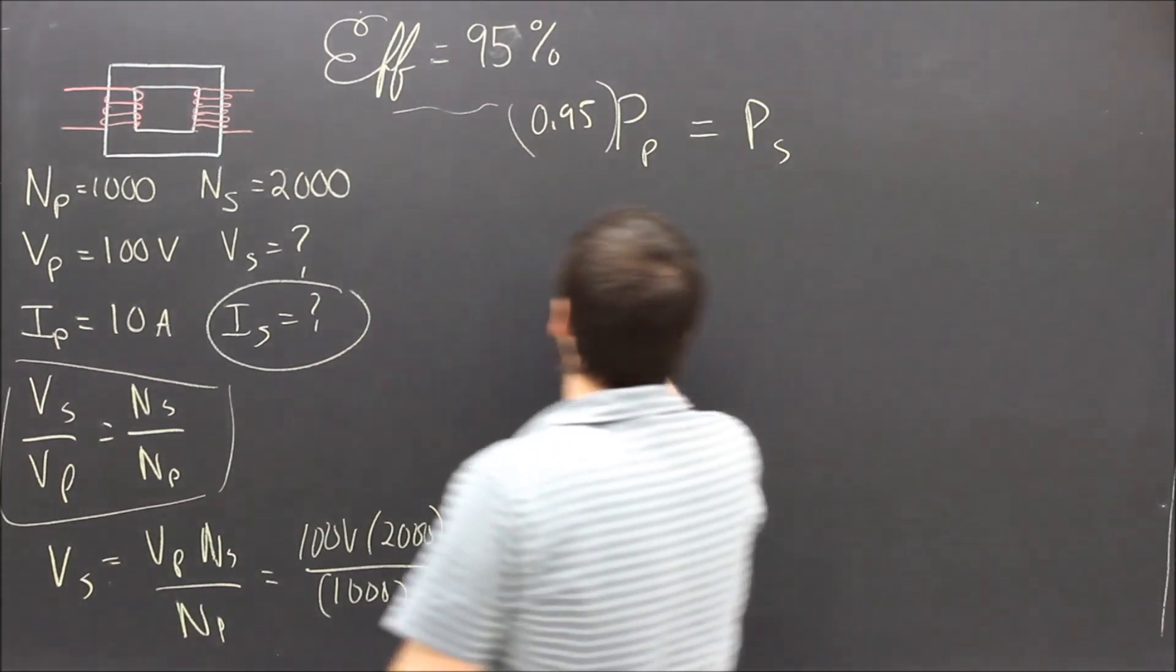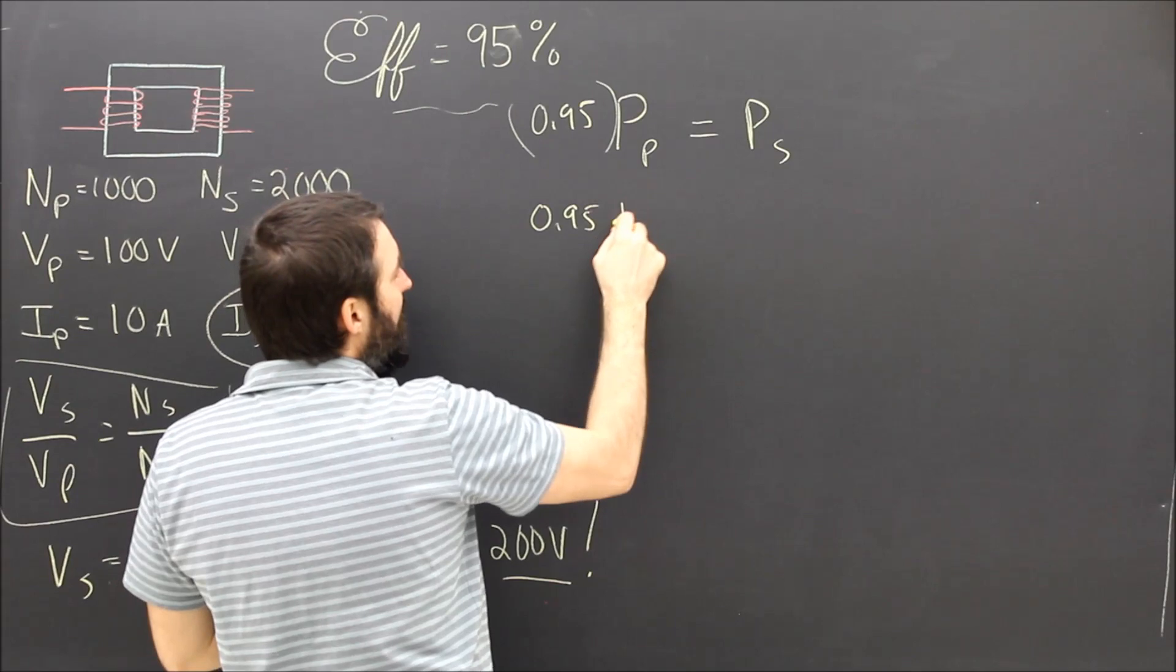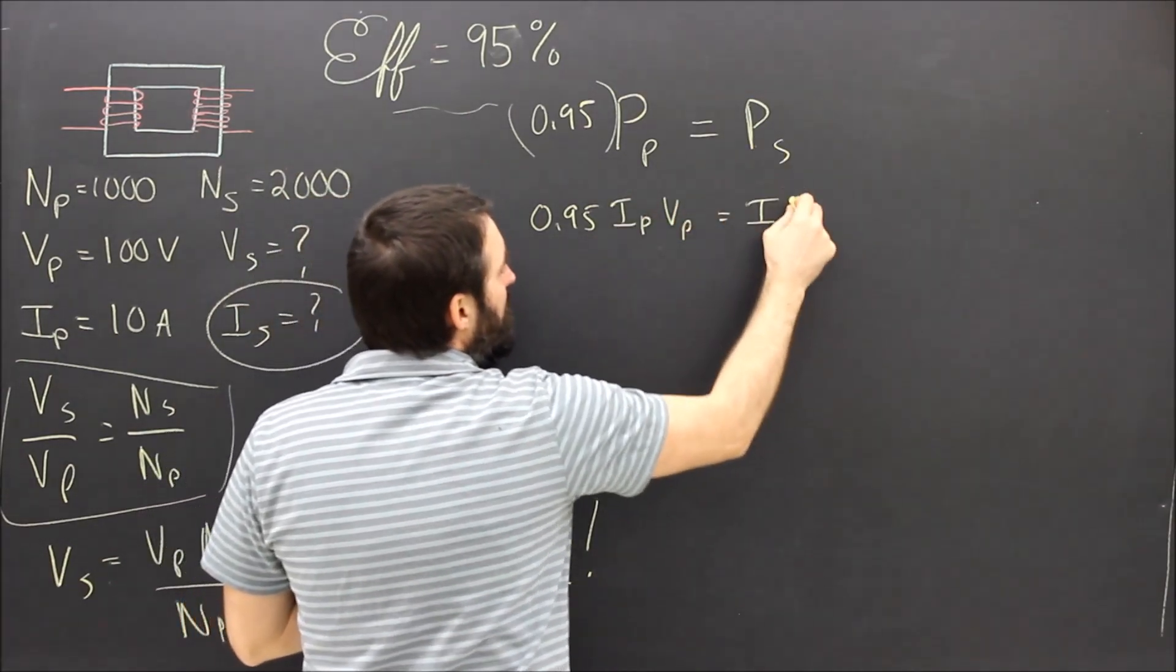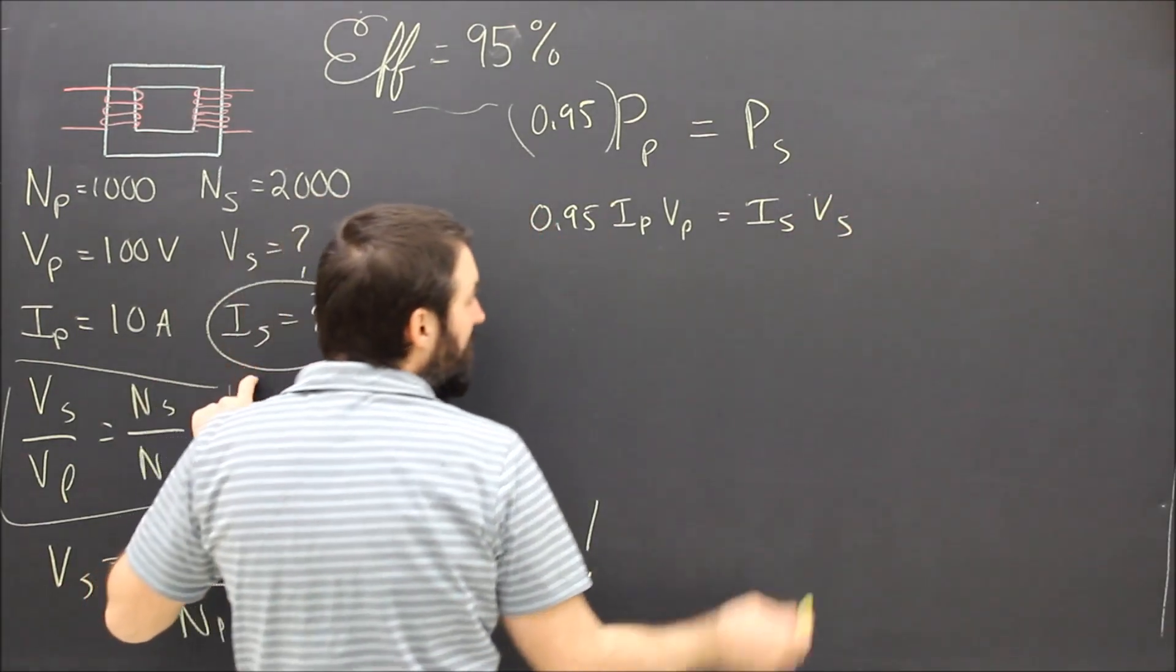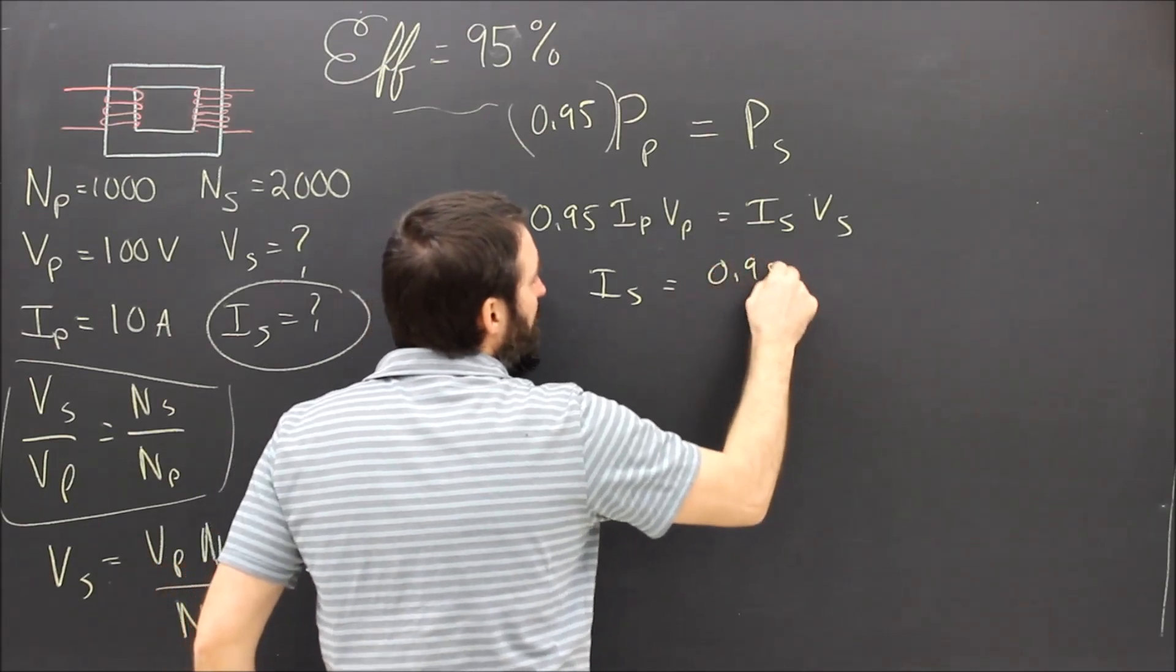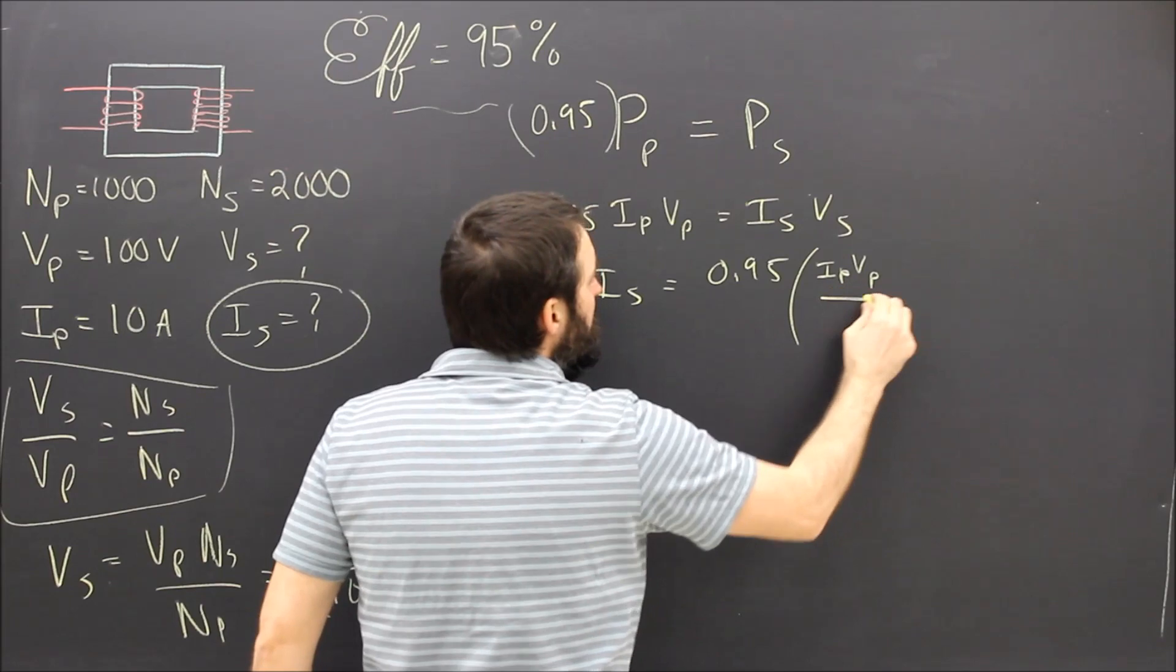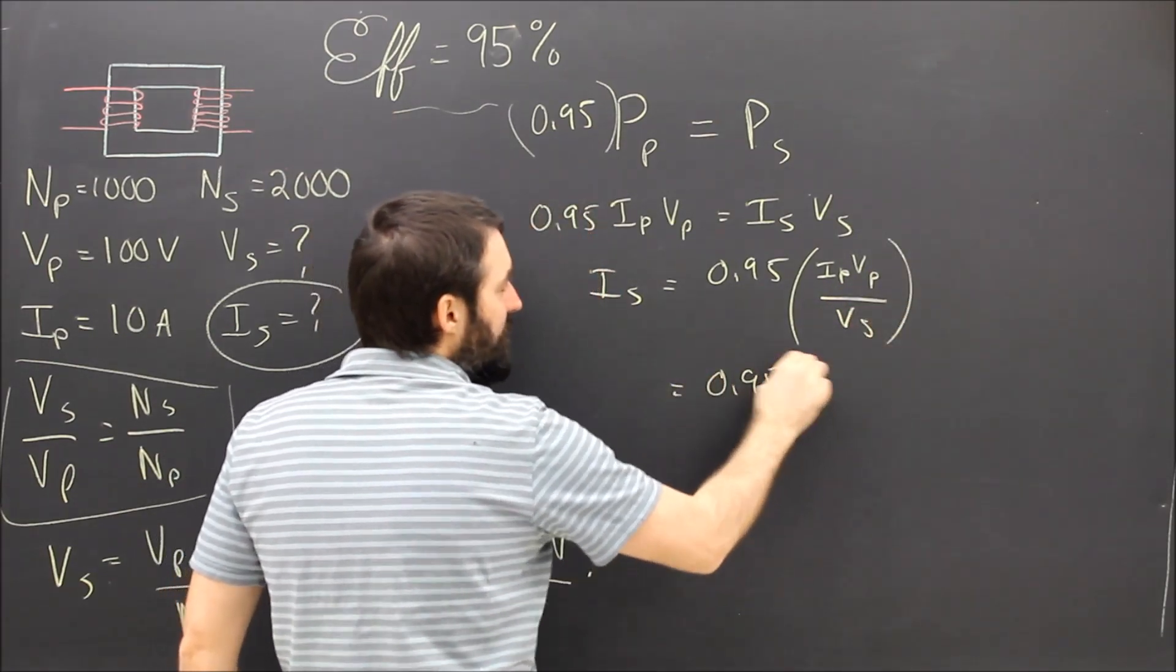So now I can just shove stuff in. I can say 0.95 equals power going into the primary. Well, that's IP times VP. And that's got to equal the power coming out. IS times VS. I'm trying to solve for IS. So IS equals 0.95 times IP VP over VS.